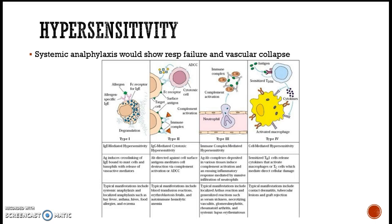For hypersensitivity reactions, know the difference between each type. For example, blood transfusion reactions or autoimmune hemolytic anemia would be type 2. Be able to identify what each type involves.